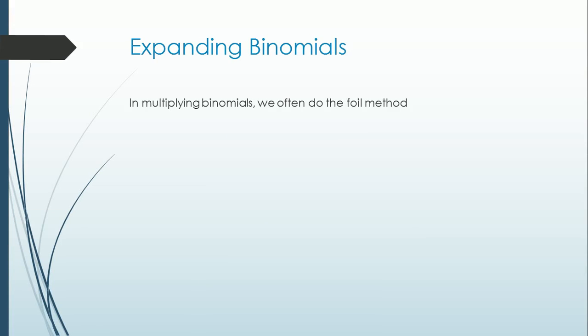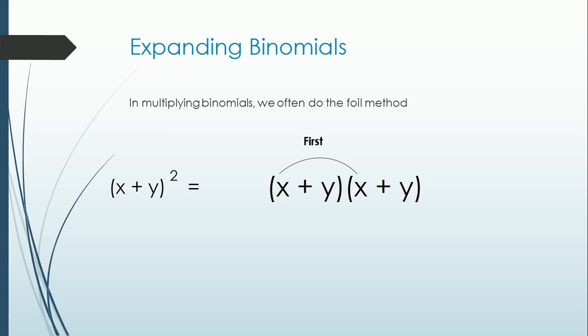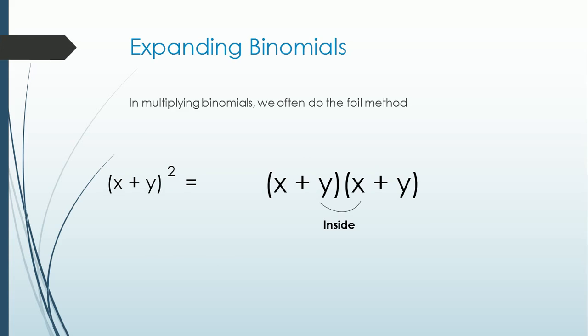For example, let's solve for quantity x plus y squared. By doing the FOIL method, we will multiply the first terms, which is equal to x squared. Multiply the outside terms, which is equal to xy. Multiply the inside terms, which is also equal to xy. Then multiply the last terms, which is equal to y squared.